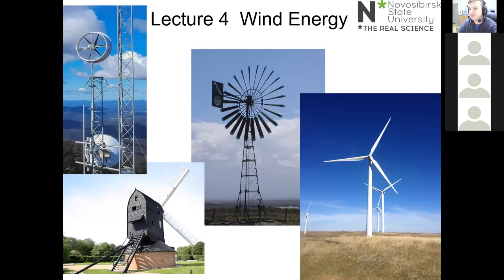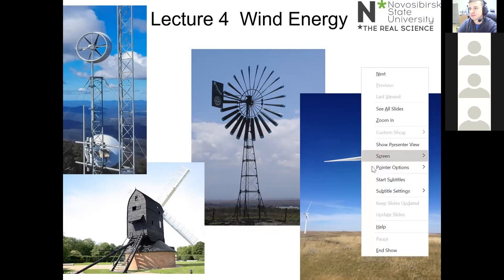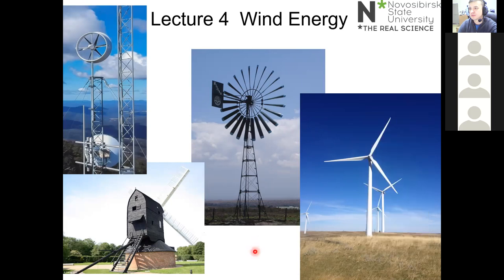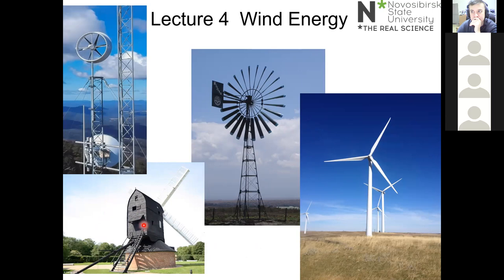The first slide of the section on wind energy shows some of the diversity of the technology. In the bottom left we have a windmill built around 1500 — an English post mill. There's a lever at the back that the miller used to turn the windmill into the wind. This was the most common type of windmill in England in the 16th and 17th centuries.